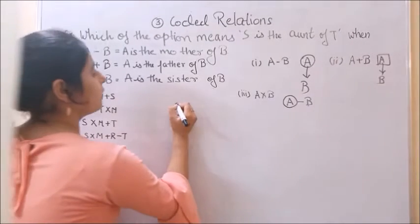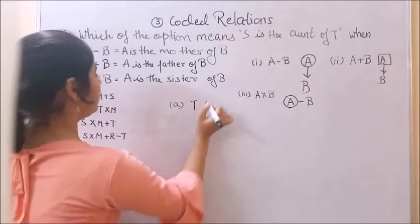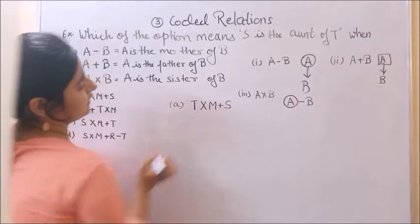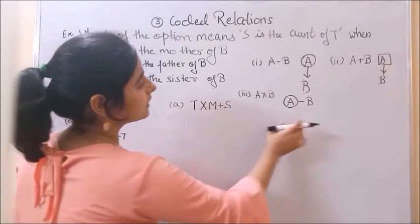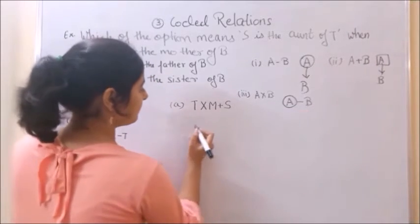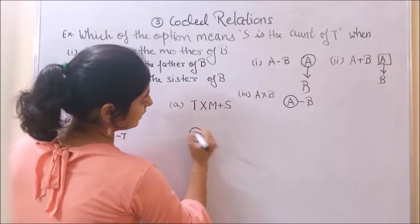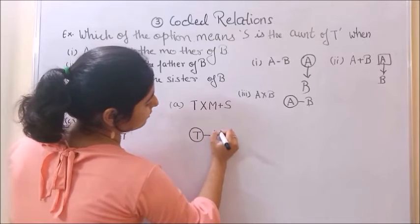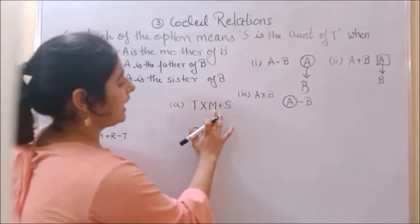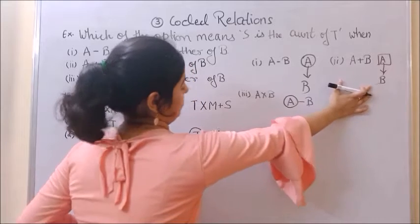Option A: T into M plus S. T into M means T is the sister of M. T is the sister of M. M can be male or female. M plus S means M is the father of S.